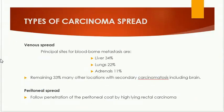Venous spread through the blood has principal sites for blood-borne metastasis including the liver, lungs, and adrenals, with remaining areas including secondary carcinomatosis and the brain. Peritoneal spread follows penetration of the peritoneal coat by high-lying rectal carcinoma — that is, carcinoma arising from the upper or middle third of the rectum which has a relation with the peritoneal reflection.